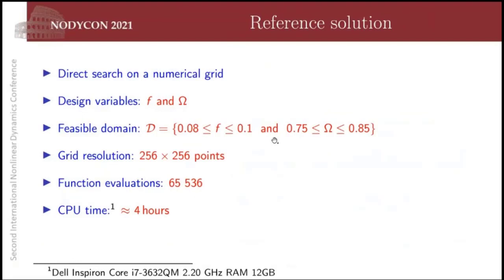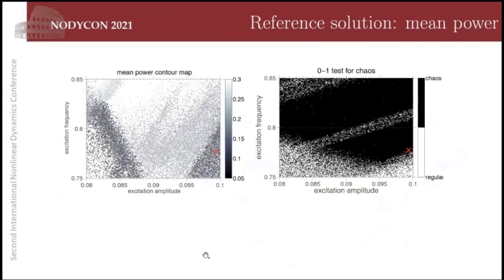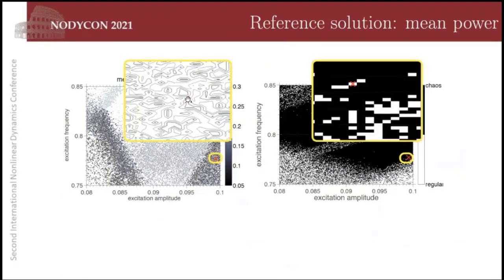For purpose of comparison, we have a reference solution here computed by brute force. We discretize the domain with a fine mesh with the design variables, the amplitude and the frequency of the external excitation. And we evaluate by brute force the problem at 600 points. And this took four hours on an i7 computer. Here you can see the contour plot of the objective function and the constraint. You can see that this point that corresponds to the optimum, it's in fact a feasible solution because it achieves the zero number for the constraint, which corresponds to regular dynamics.